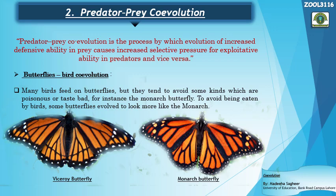In butterfly-bird co-evolution, birds are the predators and butterflies are the prey. Many birds feed on butterflies, but they tend to avoid some kinds that are poisonous or distasteful. Birds used to eat butterflies but avoid those with an unpleasant or bitter taste. To avoid being eaten by birds, butterflies evolved to look more like the monarch butterfly, which feeds on milkweed plants, making its taste bitter and distasteful to birds.